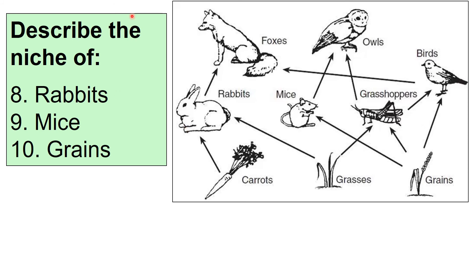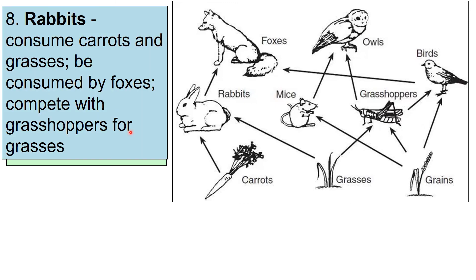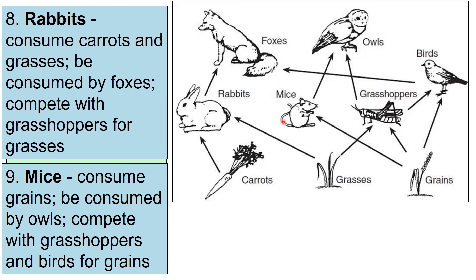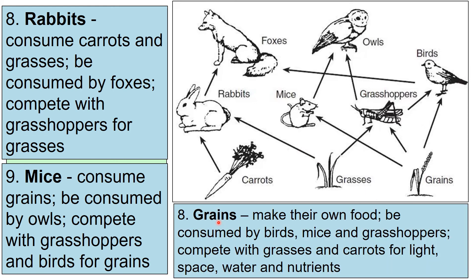You can use the food web to describe niches. For rabbits, their role is to consume carrots and grasses, be consumed by foxes, and compete with grasshoppers for grasses. Mice consume grains, are consumed by owls, and compete with grasshoppers and birds for grains. For grains — you might have missed this — they're consumed by birds, mice, and grasshoppers, but don't forget their vital role is to bring energy into the food web by making their own food. You could also say they compete with carrots and grasses for light, space, water, and nutrients.